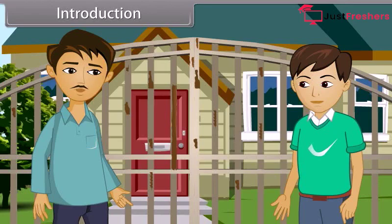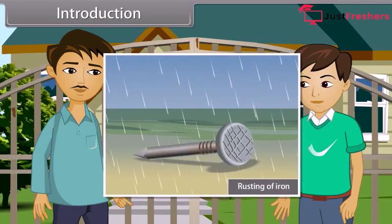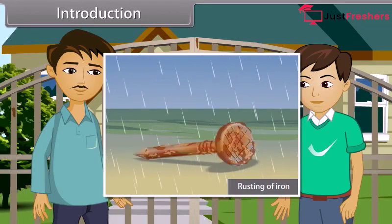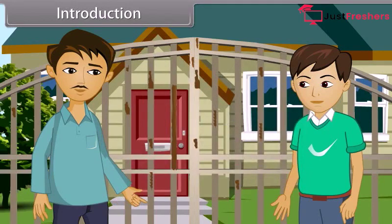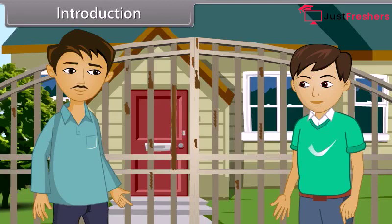Corrosion is a process of slow conversion of metals into their undesirable compounds by reaction with moisture and other gases present in the atmosphere. This gate is made up of iron and corrosion turns the iron into brown precipitate called rust. That's why it is looking so old and dull.